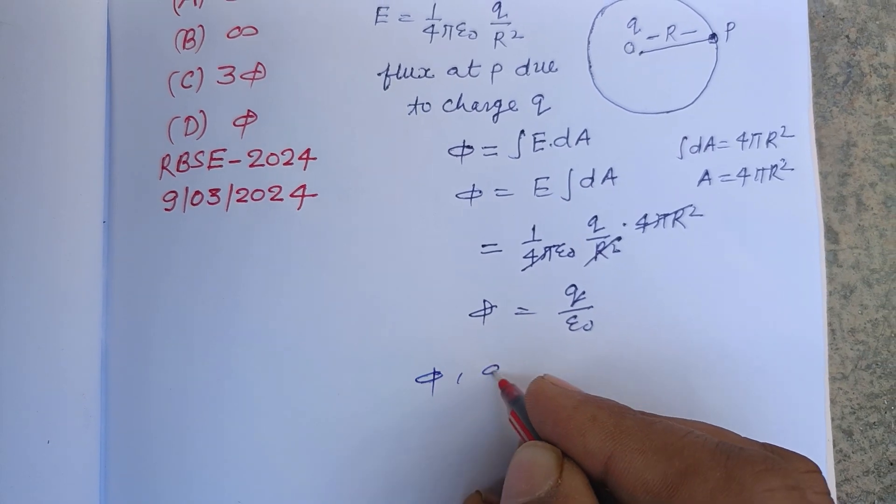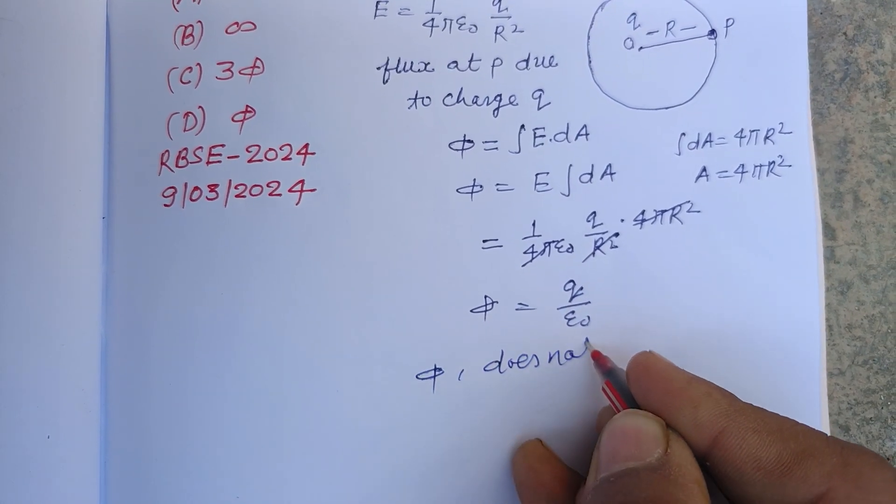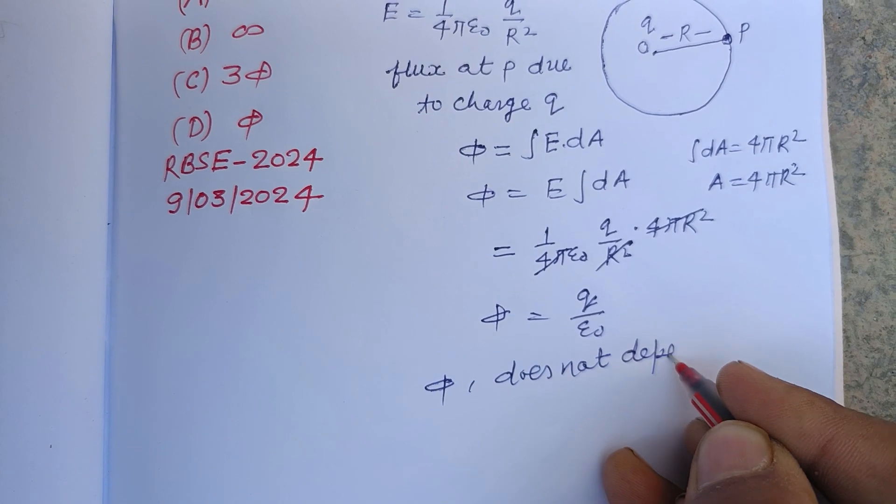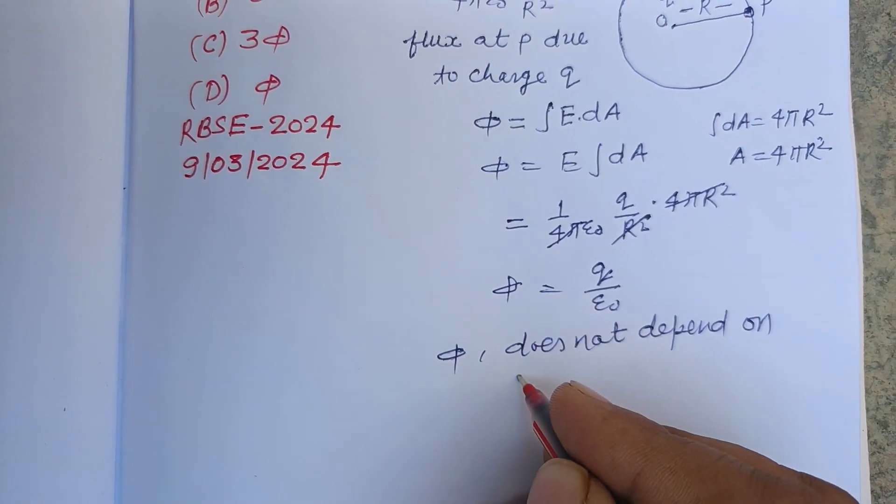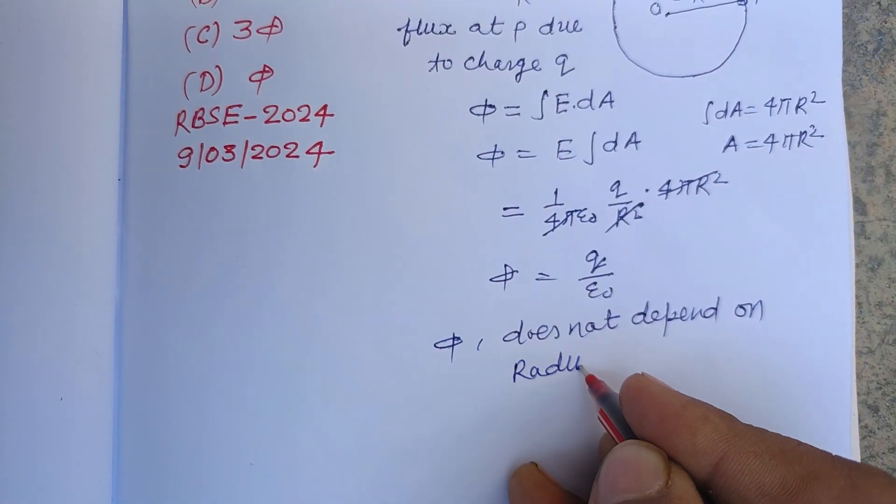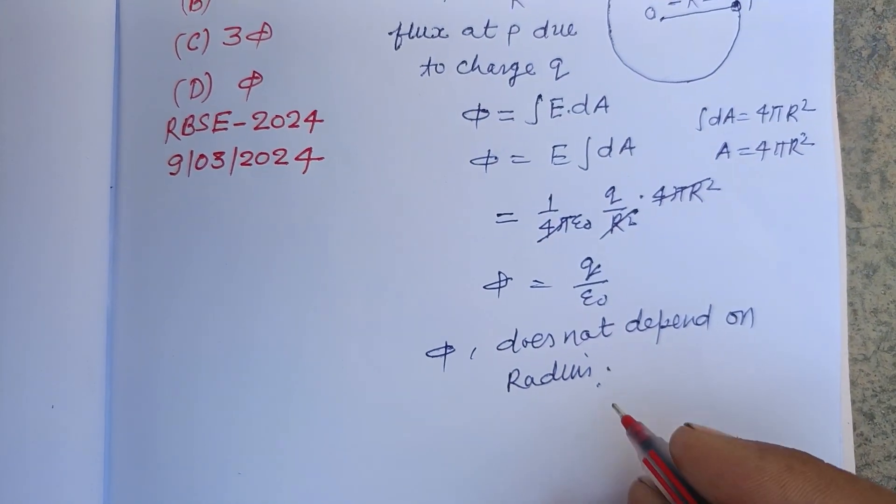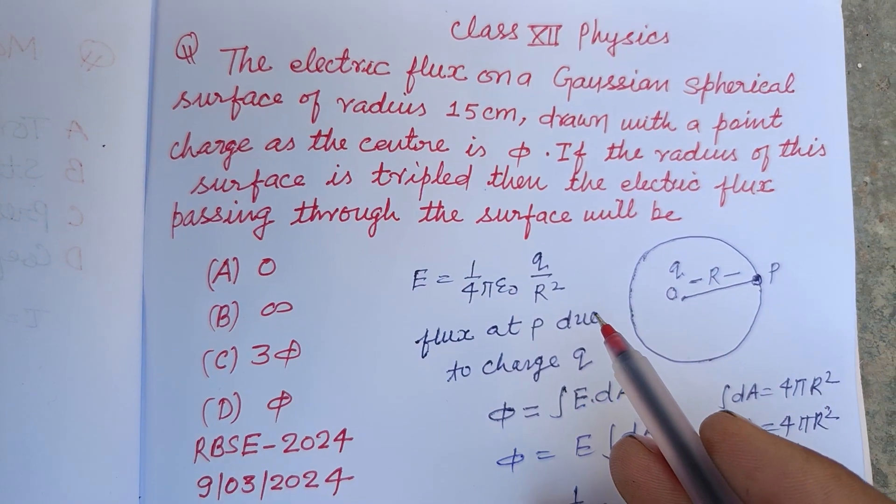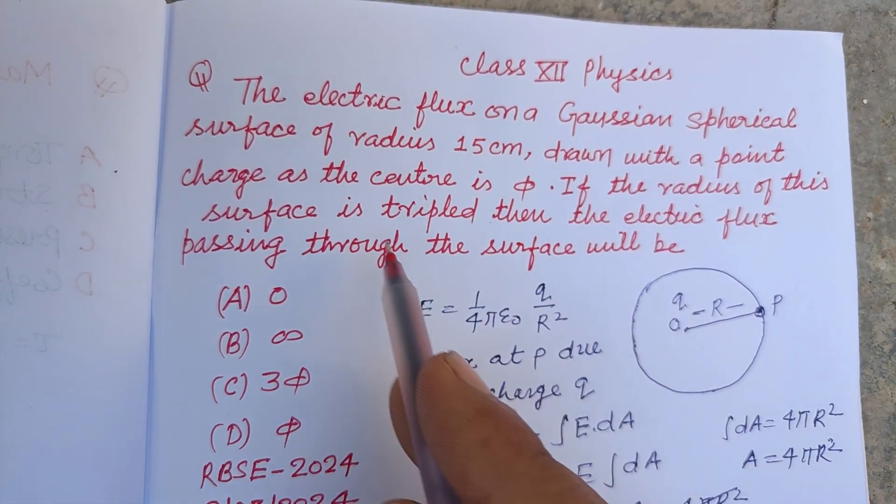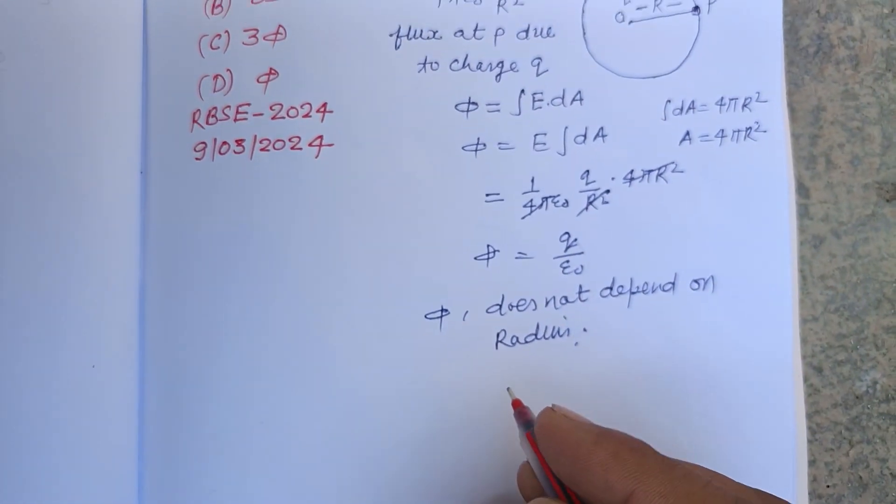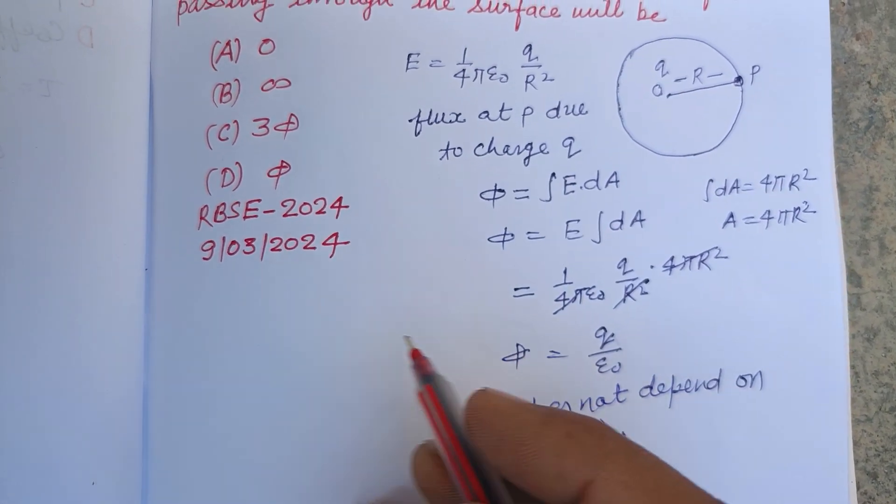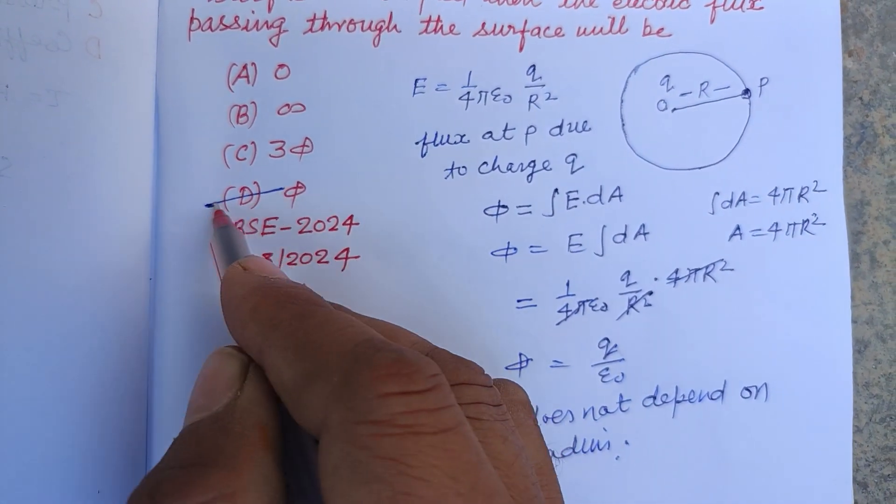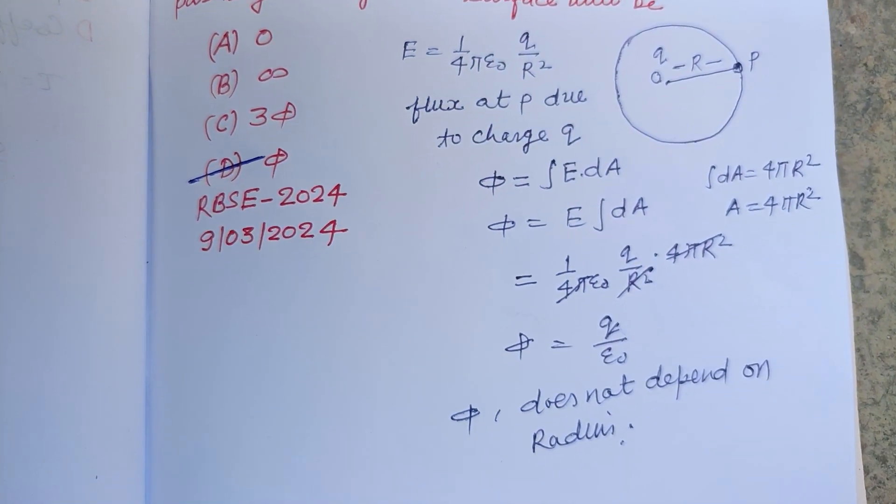Therefore, there is no change in flux at the surface when its radius is tripled. So φ remains constant, and D is the correct answer to this question.